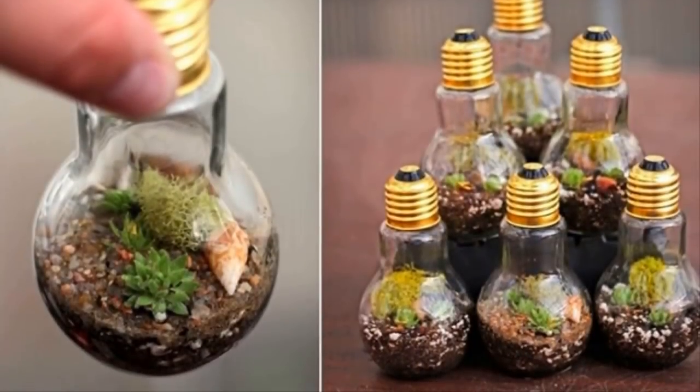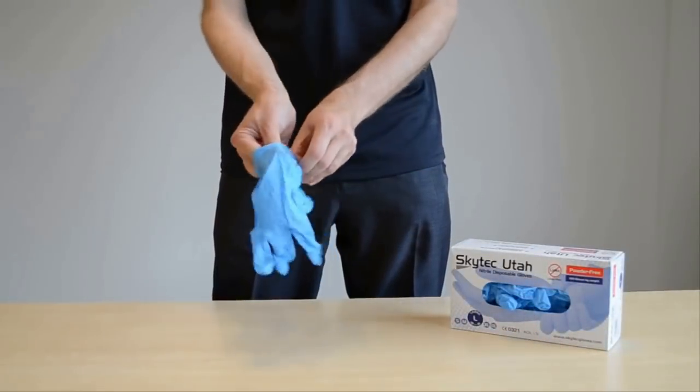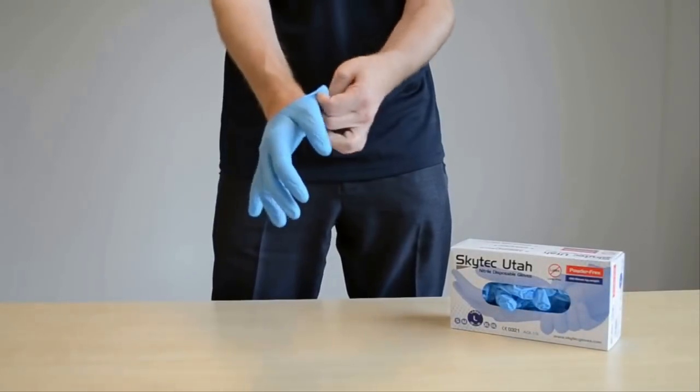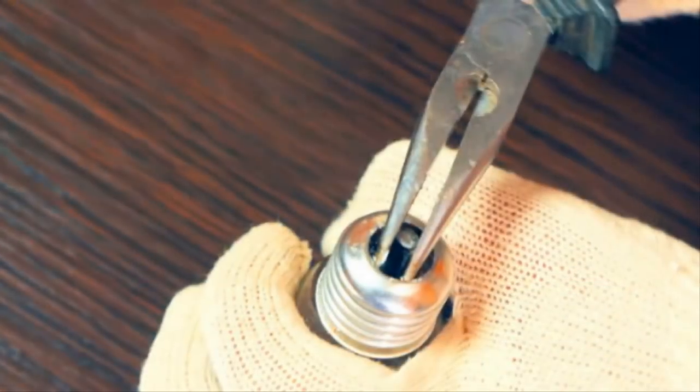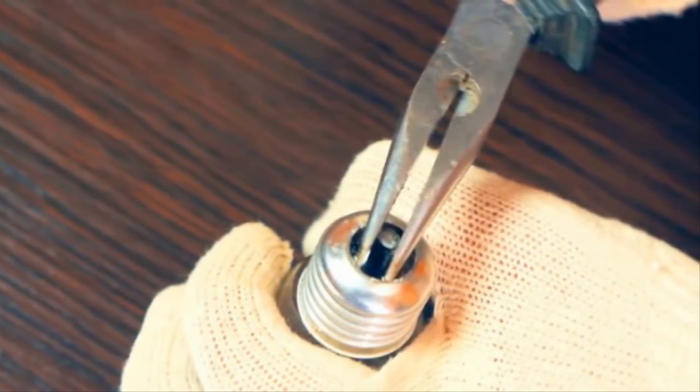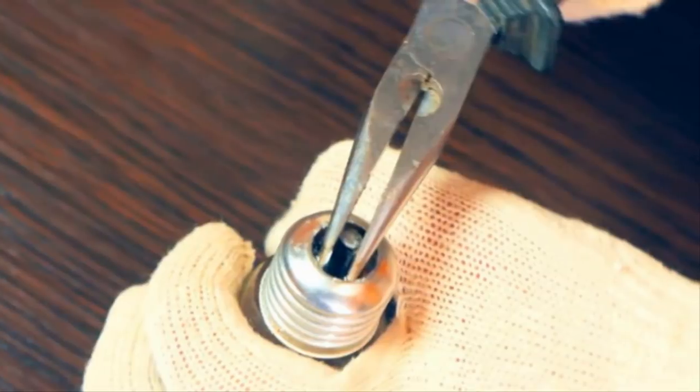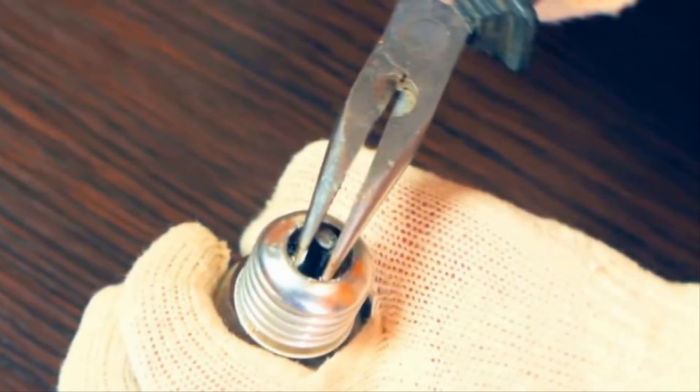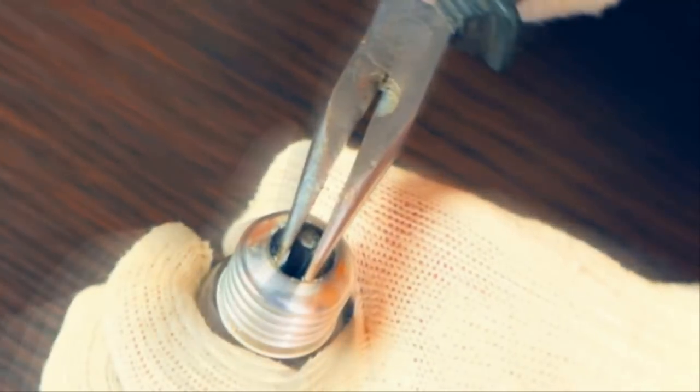To make your DIY light bulb terrarium, it's important to protect your hands. All you'll need for that is a pair of gloves. After that, grab your pliers. The first step you'll want to take for this project is to remove the silver knob-looking thing at the bottom of the bulb. Heads up, stay away from energy efficient bulbs for this project. They contain mercury and you'll be in for a trip to the emergency room or worse if you break them.